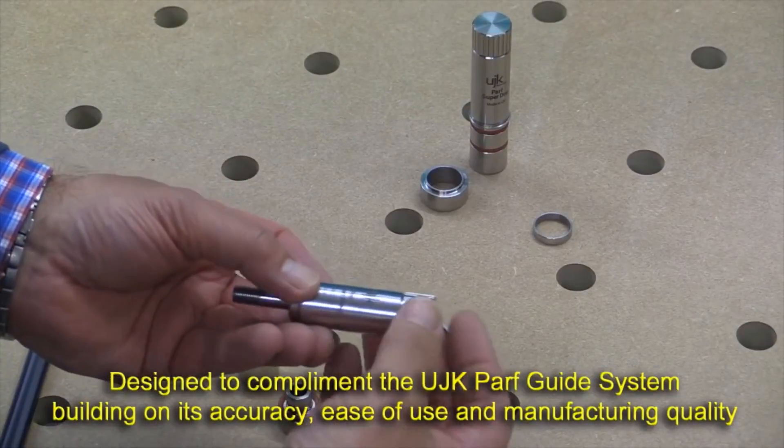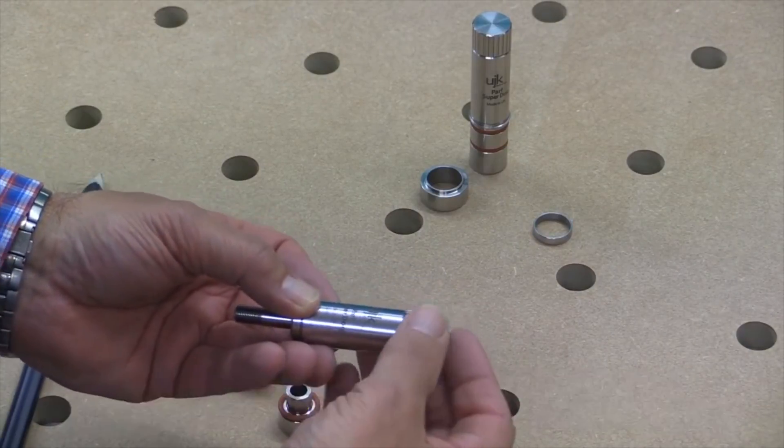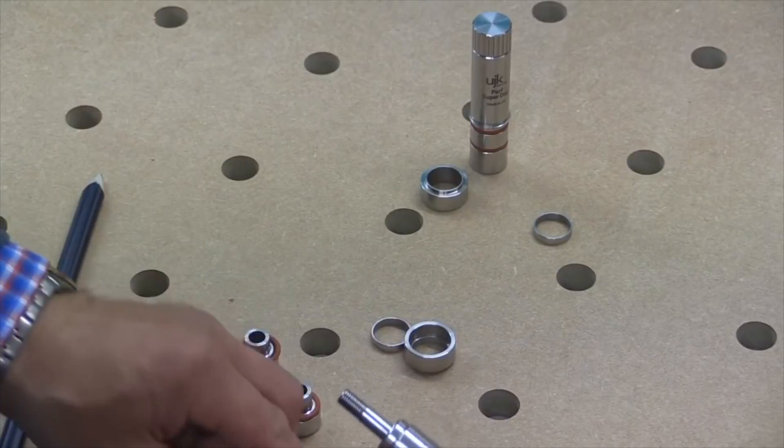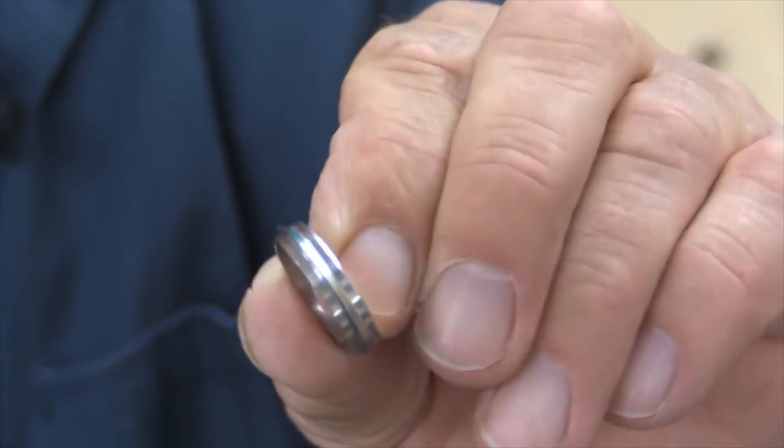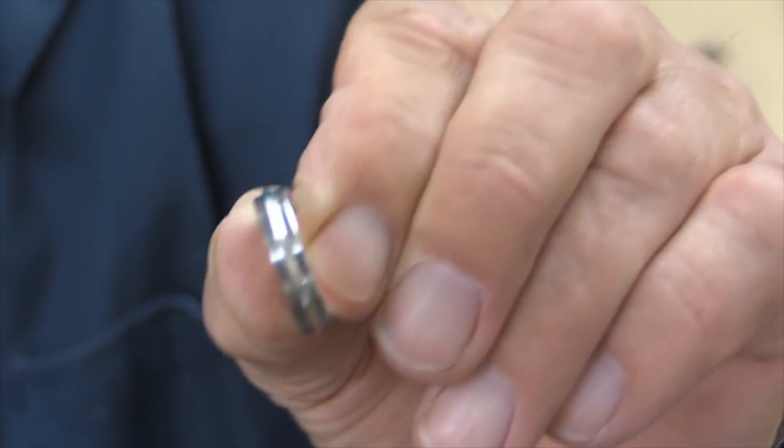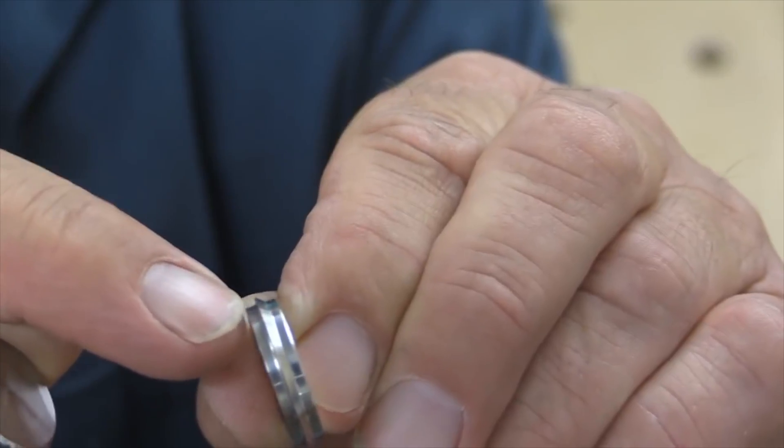So in order to build the next configuration the two standard components are fitted together. That's the locking knob and the main body. I'm then going to take this chamfer ring. If you look closely there's a chamfer on one side and it's on this side there and the other side is plain.